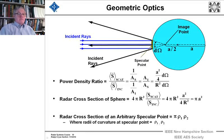And in general, for an arbitrary specular point, the cross-section is pi times the radius of curvature in one dimension, times the perpendicular dimension at the specular point.